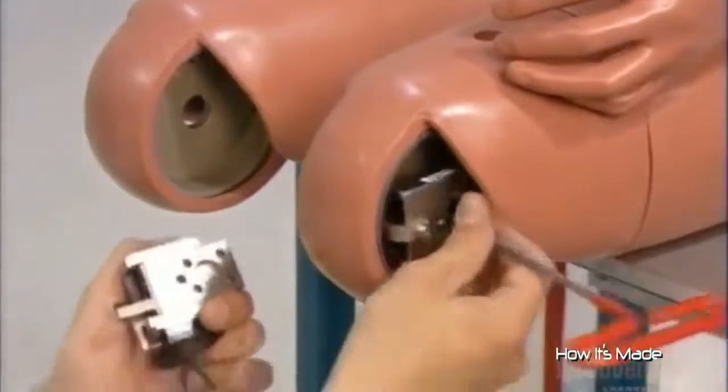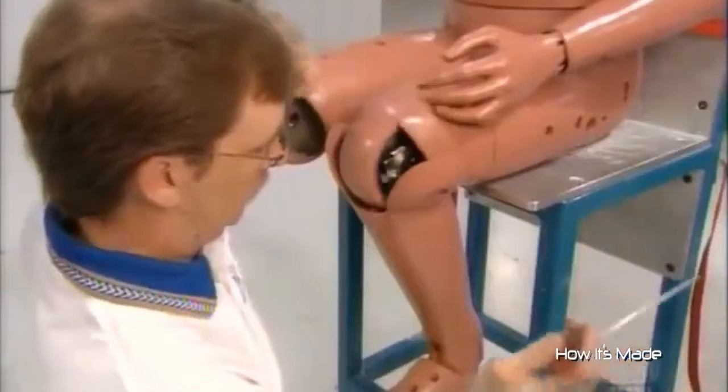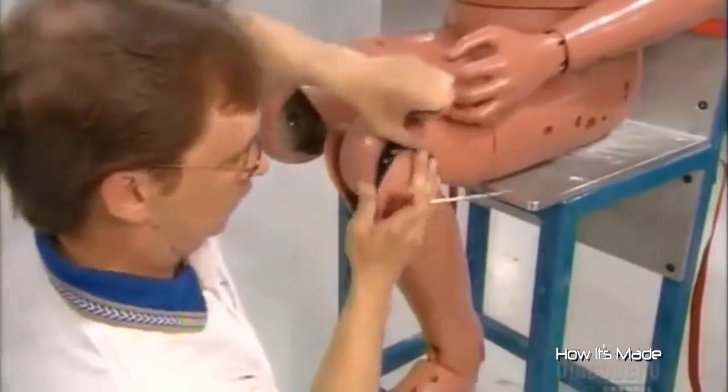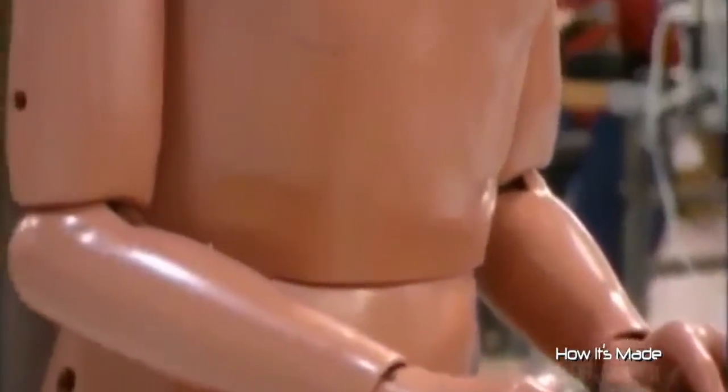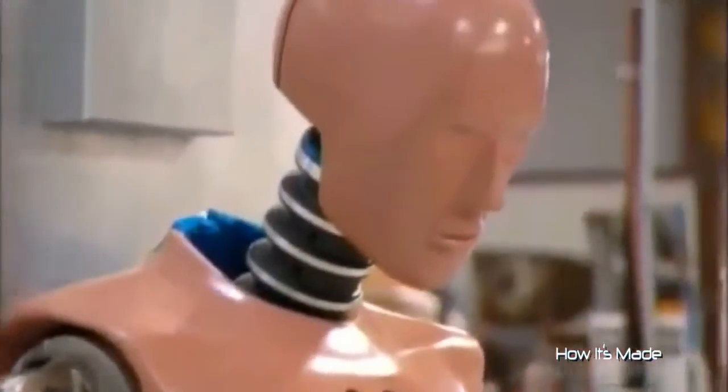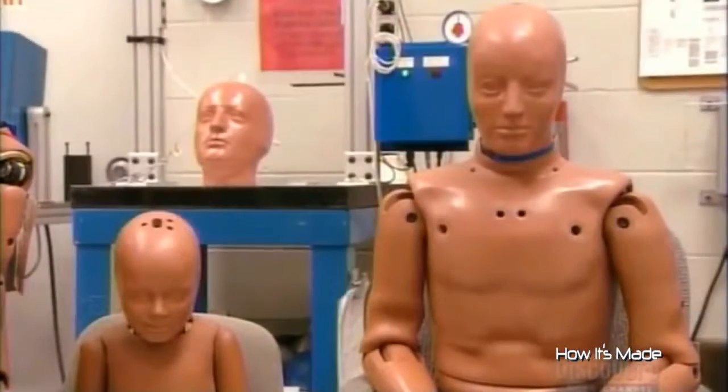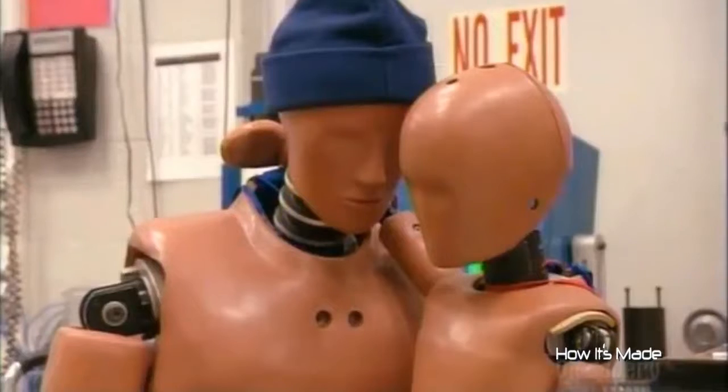Crash test dummies range in size from newborns all the way up to 102 kilogram adults. This enables researchers to be sure that seatbelts and airbags protect everyone equally well. It took a full 12 weeks to make this dummy, and now he's ready for a life of hard knocks to make traveling safer for all of us.